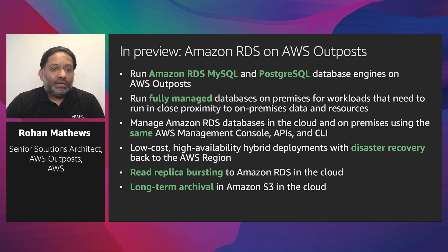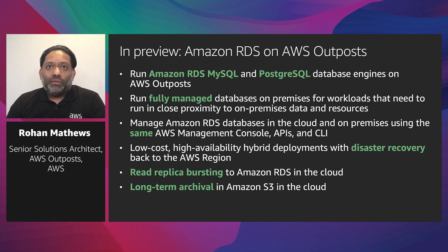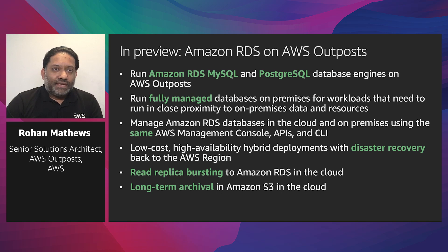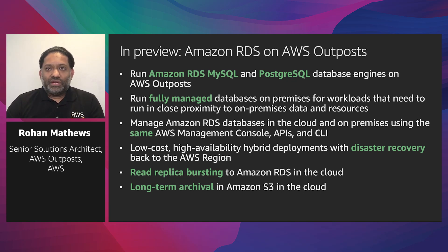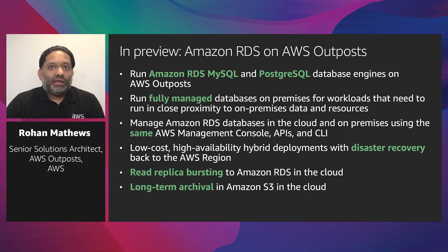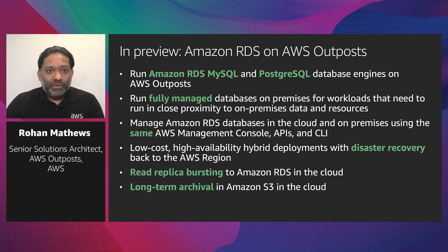The Amazon RDS service on AWS Outpost is currently in preview, supporting MySQL and Postgres database engines with additional engines coming soon. RDS makes it easy to set up, operate, and scale a relational database on Outpost the same way we do it in the cloud, providing cost-efficient and resizable capacity while automating time-consuming administration tasks including infrastructure provisioning, database setup, patching, and backups — freeing you to focus on application development. You can manage RDS databases both in the cloud and on-premise using the same AWS management console, same APIs, and same CLI.